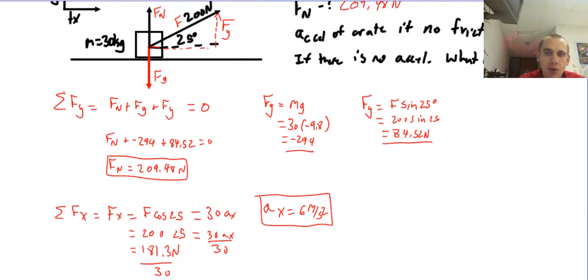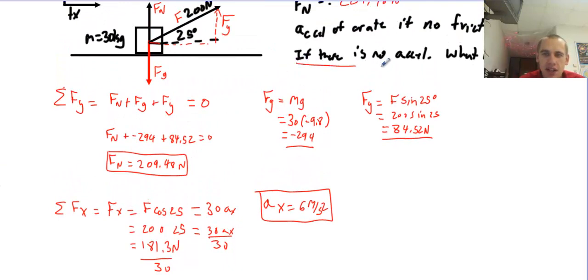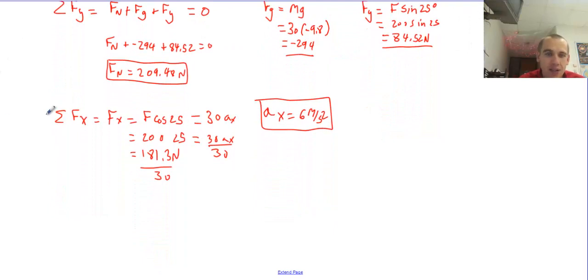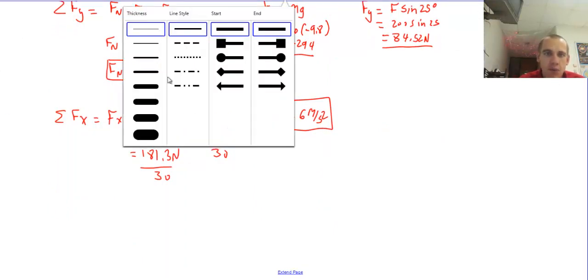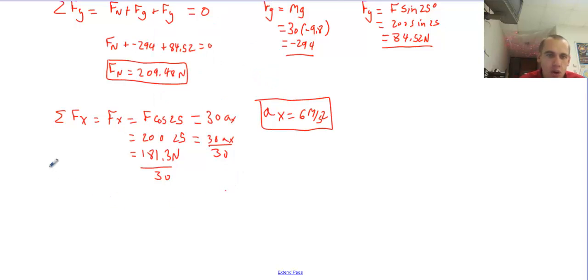The last part of this says, if there is no acceleration, that is to say that the forces are balanced, what is the coefficient of friction? If the forces are balanced, that tells me there's another force acting in this direction. That would be the frictional force. And I know that because friction always opposes motion or intended motion. So it's going to act against what I'm trying to do. So then it's just a matter of putting in all the information I know, this time assuming there is friction.